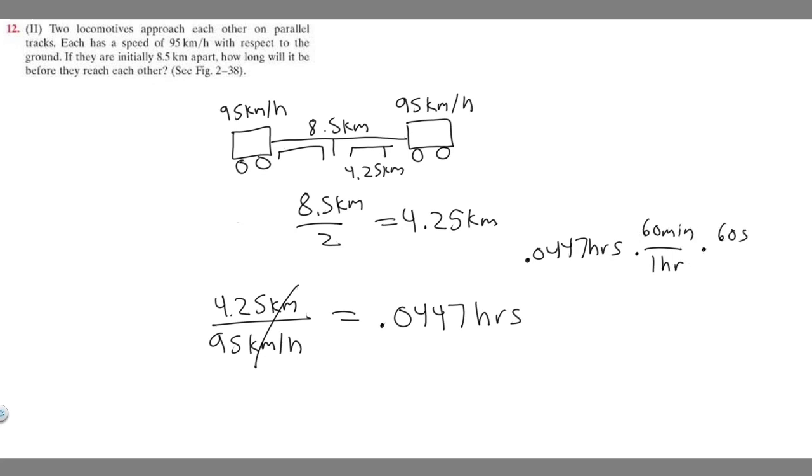And if you want it in seconds, just multiply by 60 again because you can see that these cancel. So I'm just going to take my answer in minutes. If you take 0.0447 and multiply it by 60, you're going to get 2.68.